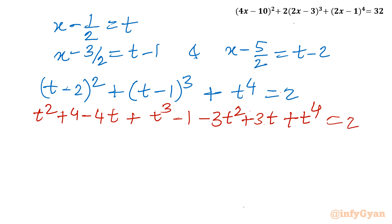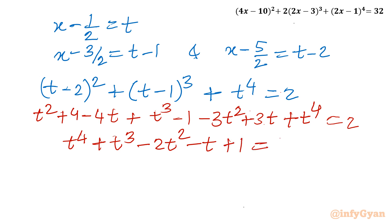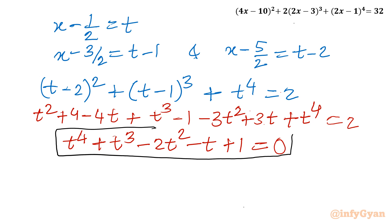Taking all terms to one side and summing up: t⁴ + t³ - 2t² - 3t² + t² - 2t + 1 = 0, which simplifies to t⁴ + t³ - 2t² - 2t + 1 = 0. This is a conventional quartic equation. Now I will divide by t² to convert it into a reciprocal equation — and note that t cannot equal 0, as it is not a solution.